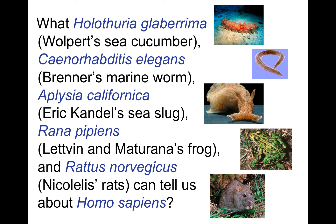Lettvin, Maturana, McCullough, and Pitts demonstrated how the periphery — the frog's eye in this case — and the frog's brain, specifically its tectum, which is the precursor to the visual cortex in mammals, share the responsibility for perception. The lesson I took away from reading their 1959 paper is that evolutionary pressure encouraged the integration of sensory modalities, thus providing an opportunity for developing a more general and centralized computational substrate.